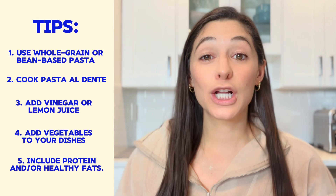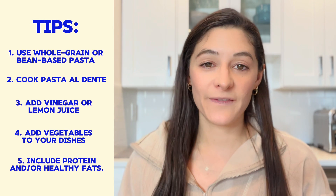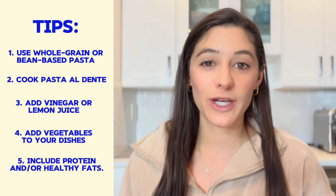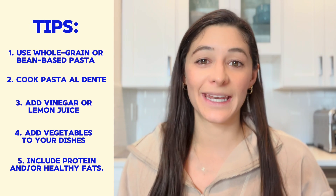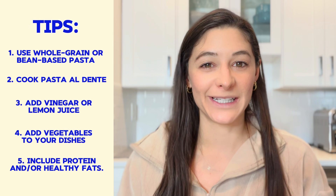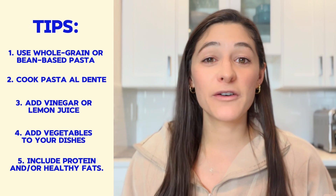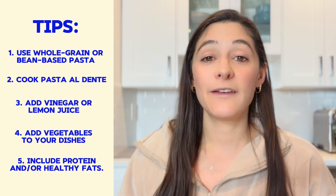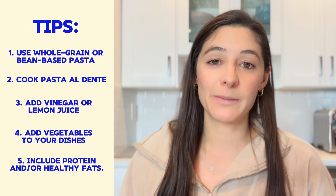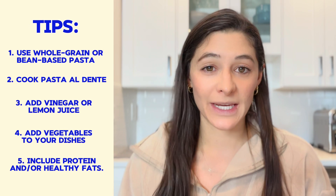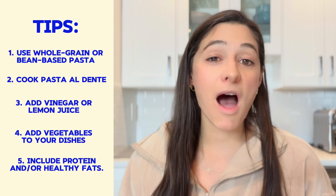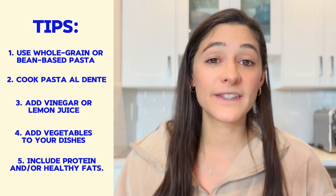Lastly, make sure you're including protein and/or healthy fat with your meals. Including lean protein and healthy fats in your dishes is going to slow the absorption of carbohydrates into your bloodstream and lower the glycemic effect of that meal. Lean proteins include things like tofu, tempeh, and legumes. If you eat animal products, aim for fish, shellfish, or chicken breast with no skin. Healthy fats can be things like olive oil, olives, nuts, seeds, and avocado.